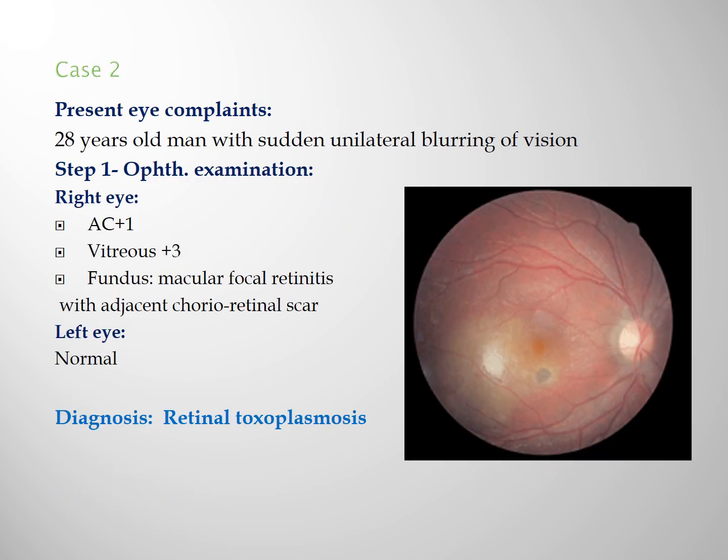Case number 2: a 28-year-old man with sudden unilateral blurring of vision. Step 1 is ocular examination. In the right eye we detect plus-1 cells in the anterior chamber, plus-3 cells in the vitreous, with focal retinitis at the macula and adjacent chorioretinal scar, while the other eye is completely normal. The diagnosis is recurrent retinal toxoplasmosis, concluded from the first step — ocular examination — with no need to proceed to systemic manifestations or lab investigations.